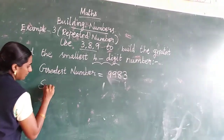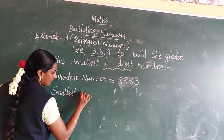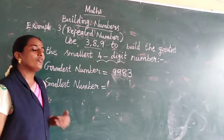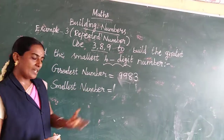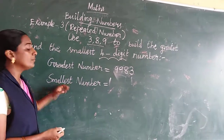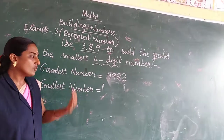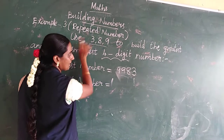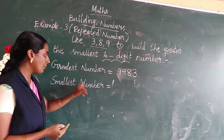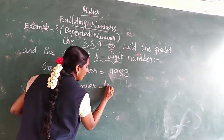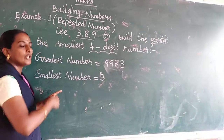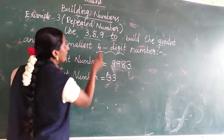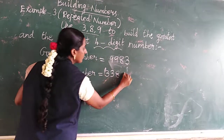For the smallest number, small to big: the smallest number is 3. Since we need 4 digits, we repeat the smallest number and write 3 again. Then 8, and last is 9. So the smallest 4-digit number is 3389.